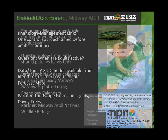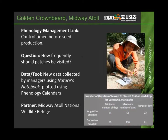On Midway Atoll, folks are using Nature's Notebook directly — not the gridded or modeled products. They're trying to control Golden Crownbeard before it produces seeds and have nearly eradicated it. A few patches remain but they're spread apart, so they're figuring out how often to visit. They collected data using Nature's Notebook, plotted it using the phenology calendars, and identified the minimum number of days between leaves and recent fruit or seed drop — which translates to the minimum number of days between site visits.